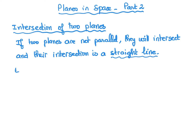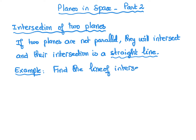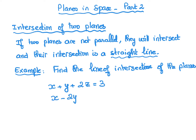Let's have a look at an example. Find the line of intersection of the following two planes: x plus y plus 2z equals 3 — that's the first plane — and x minus 2y plus z equals 7 — that's the second plane.